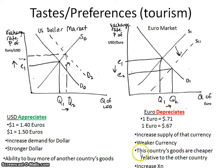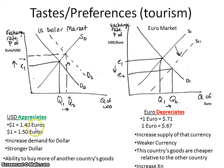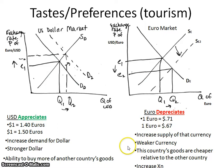Another way of saying the euro depreciates is to say they have a weaker currency. But because their euro has depreciated, one of the good things for them is that their goods are cheaper relative to the other country. That will cause an increase in net exports, because everyone in the United States will think: now I can get more euros for my dollar, so things are cheaper over there. A weaker currency isn't necessarily bad — it makes goods cheaper, which increases net exports and therefore increases aggregate demand.